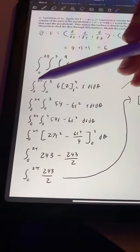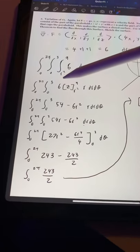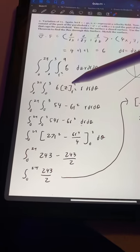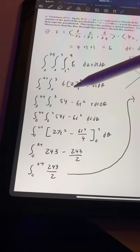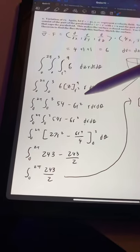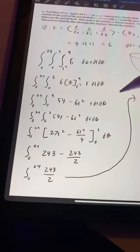So I started by taking the 6 out, and then doing 9 minus r squared. 9 times 6 is 54, minus 6 times r squared, times r dr dθ.